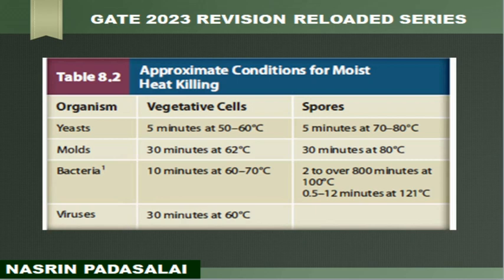Next is mold. Vegetative cells of mold are killed in 30 minutes at 62 degrees Celsius. Whereas spores of mold are killed at the same 30 minutes but at increased temperature — you need at least 30 minutes at 80 degrees Celsius.